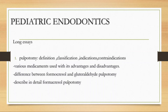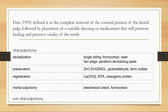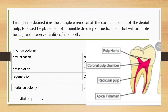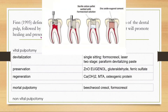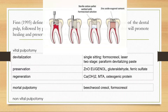The difference between formocresol and glutaraldehyde pulpitomy, and describing in detail about formocresol pulpitomy. Finn defined pulpitomy as a complete removal of the coronal portion of the dental pulp. The dental pulp has a coronal portion and a radicular portion. The radicular portion is the portion of the pulp present within the root, and the coronal portion is the one present within the crown. Pulpitomy is removal of the coronal portion, followed by placement of a suitable dressing or medicament that will promote healing and preserve the vitality of the tooth.